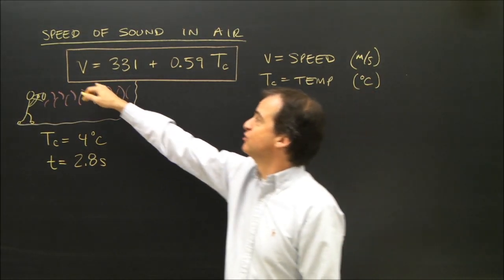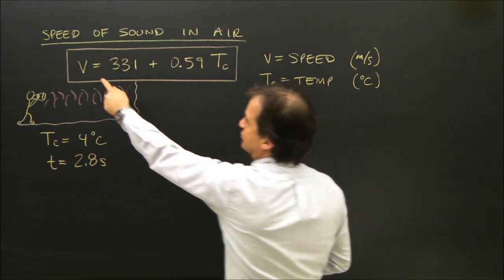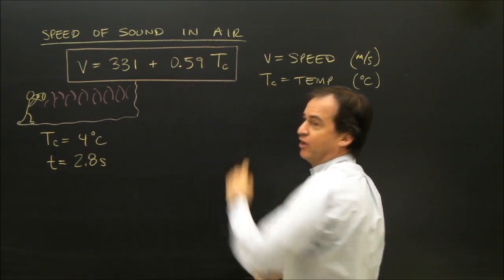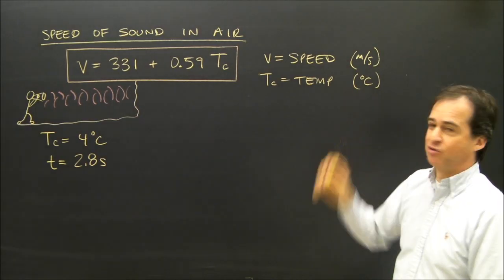The formula that tells us how fast sound waves are travelling in air is V, the speed, is equal to 331 plus 0.59 times the temperature in degrees Celsius.